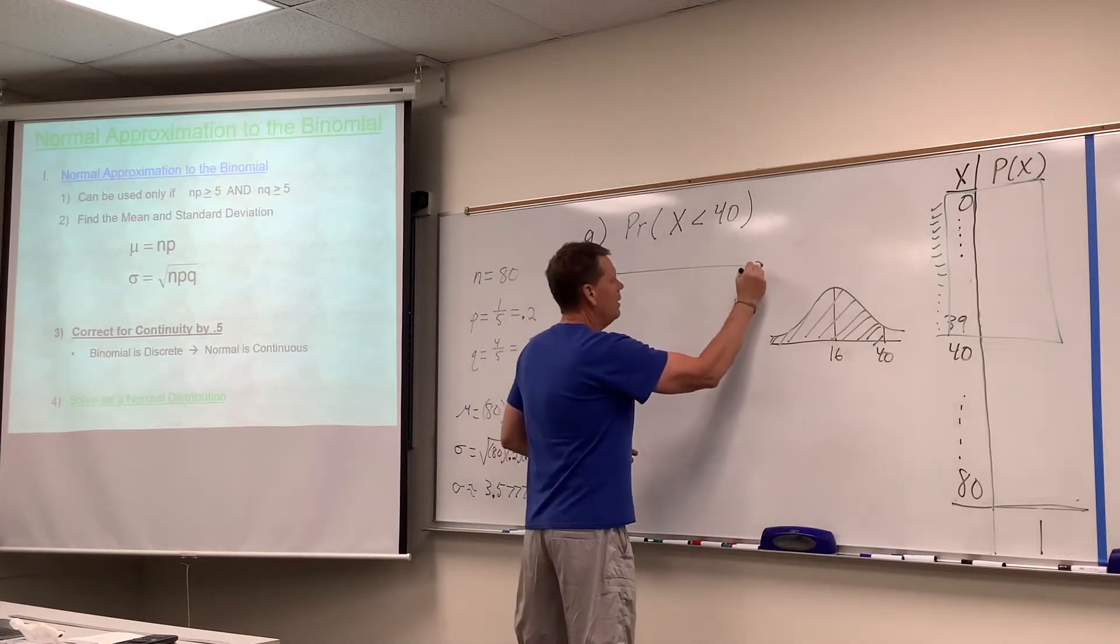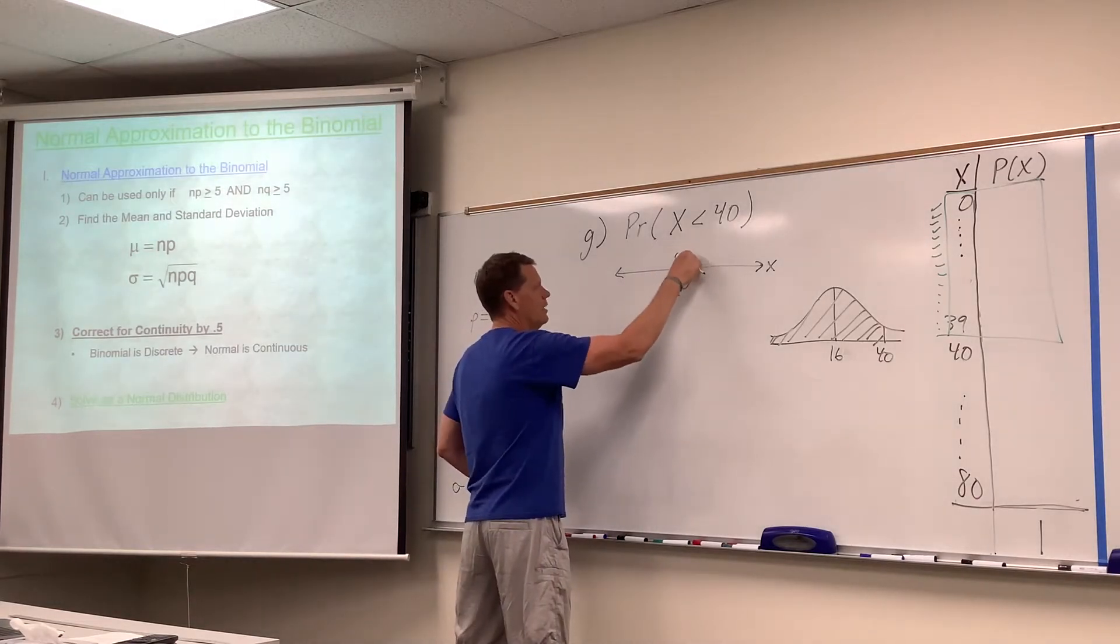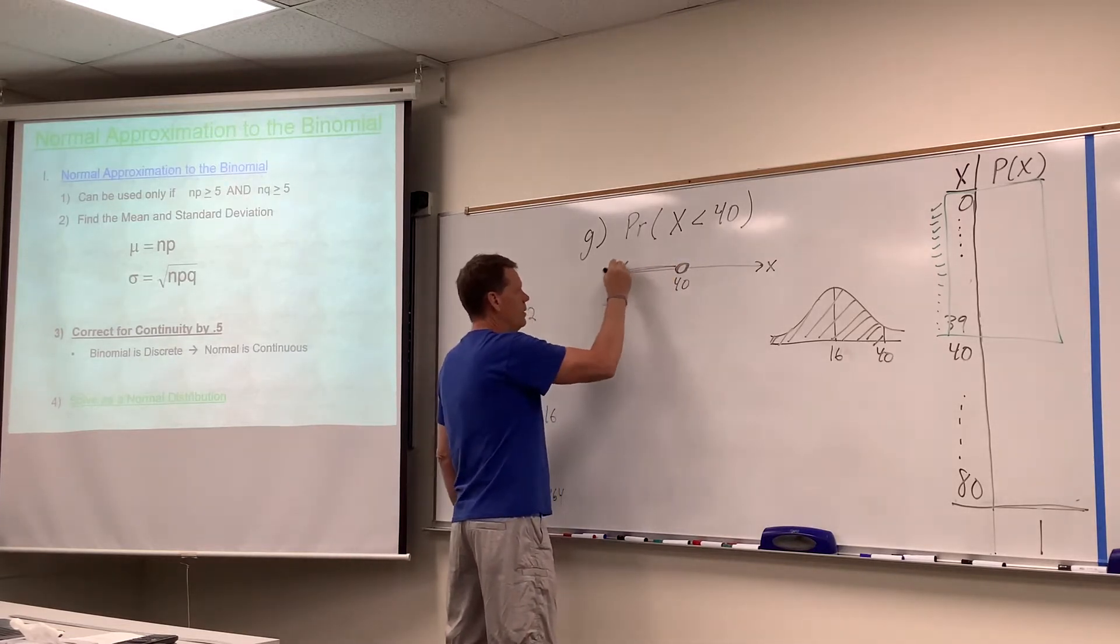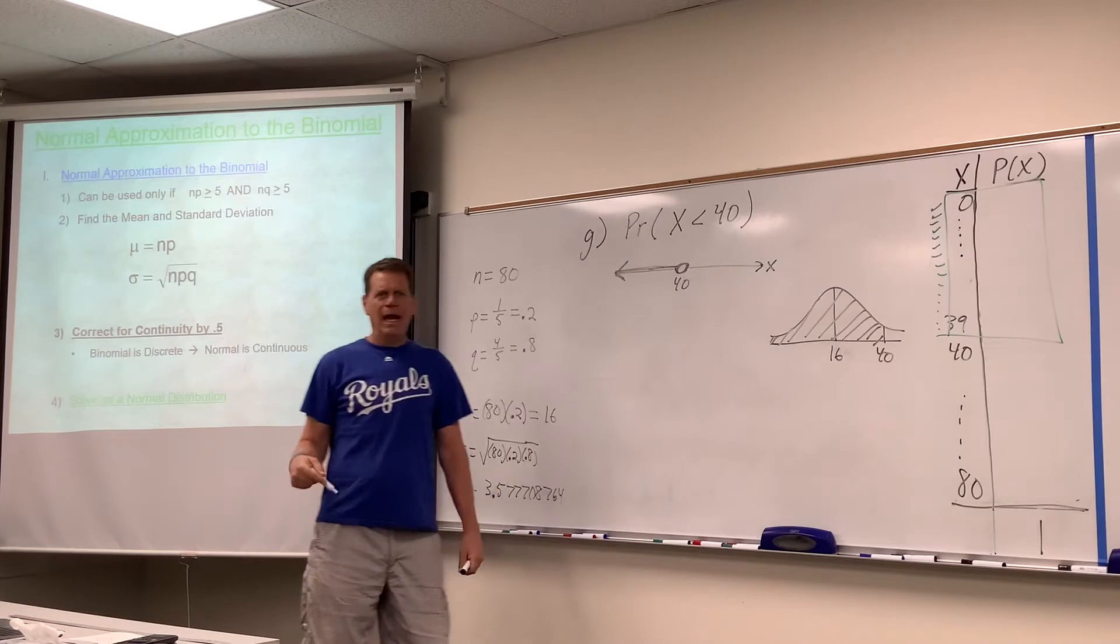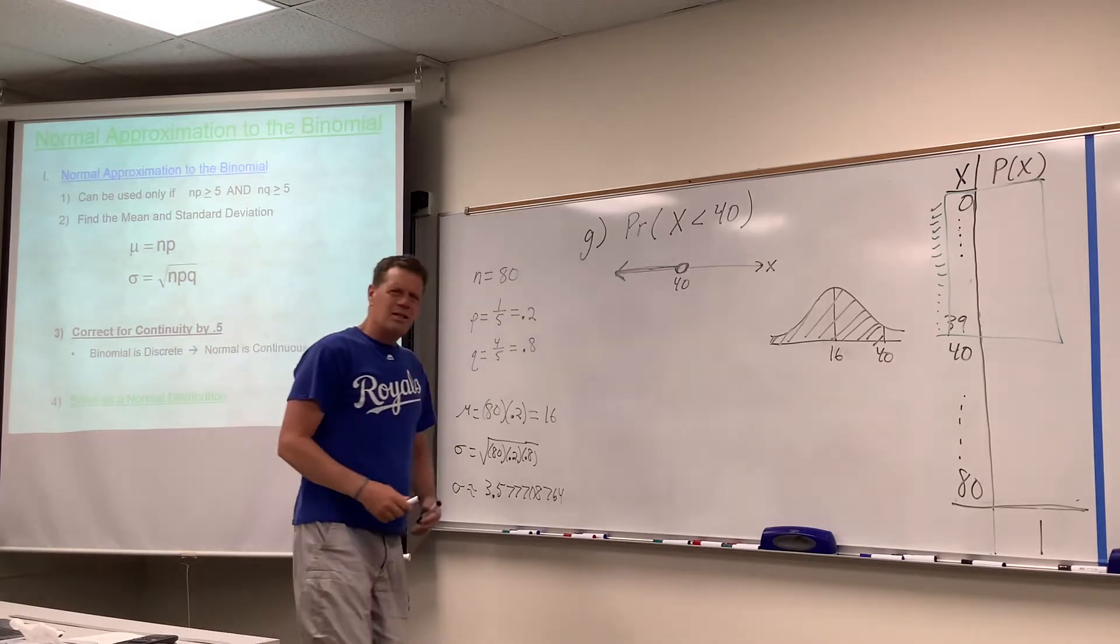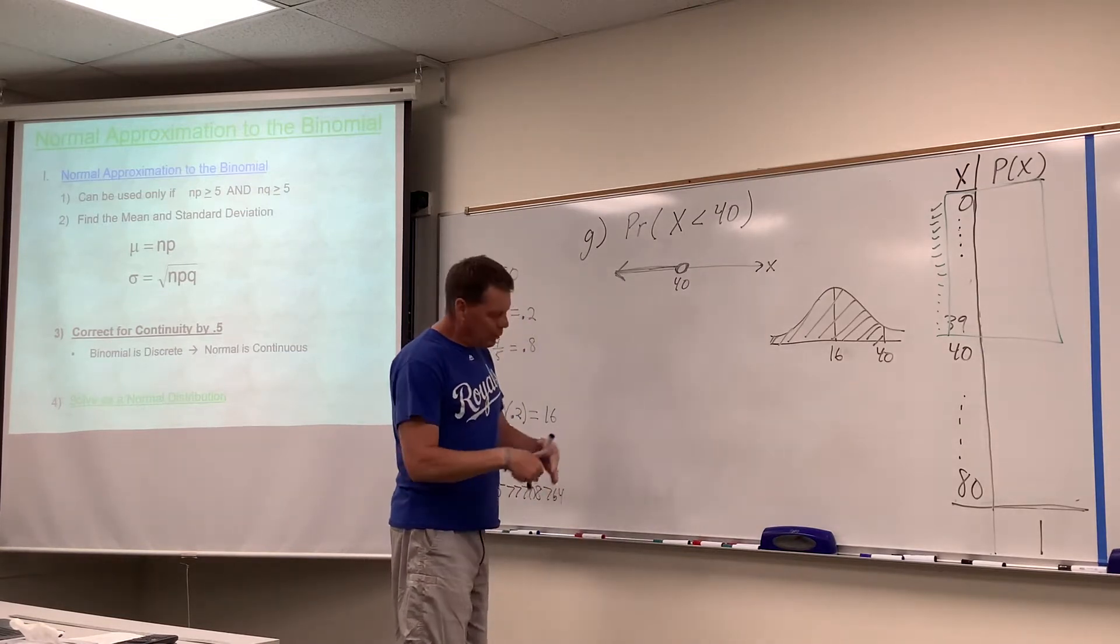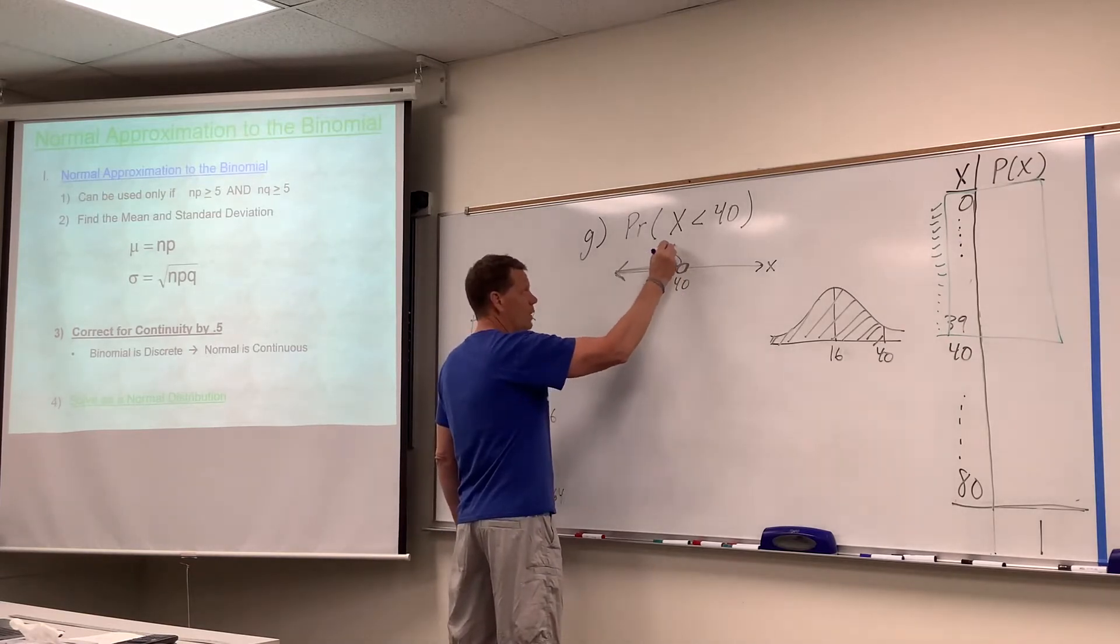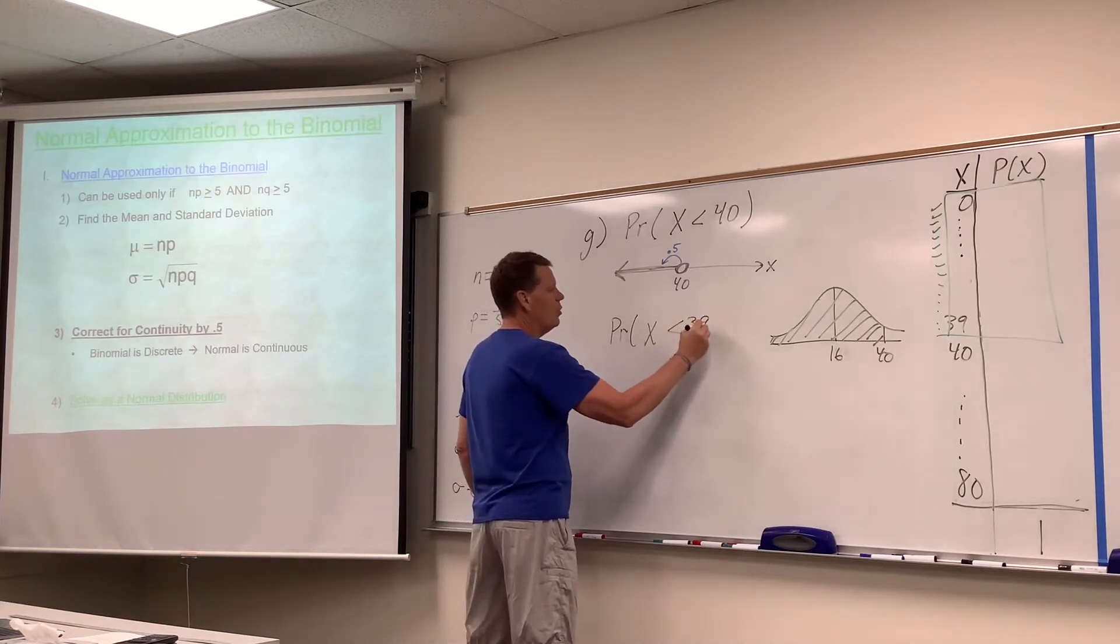When we draw a number line with all values that x could be and put 40 on it, less than 40 would not include 40. That would be to the left of 40, strictly less than 40. When we correct for continuity, if we don't want to keep the 40 and want strictly less than, we go below 40 by 0.5. Therefore, this would be the probability that x is less than 39.5.